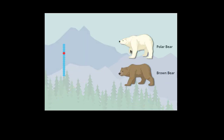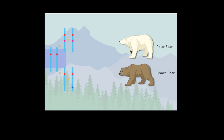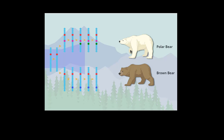When a lineage diverges, each one begins to accumulate different DNA variations. Over time, and as lineages become increasingly isolated from one another, their DNA becomes more and more distinct.